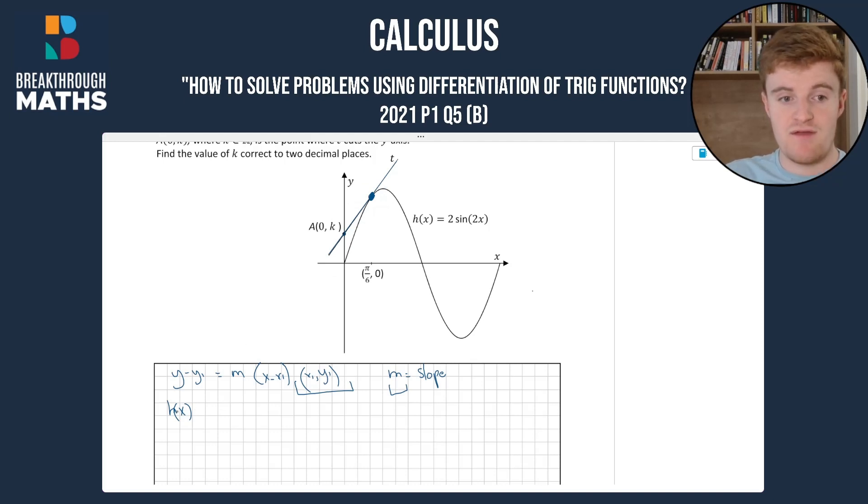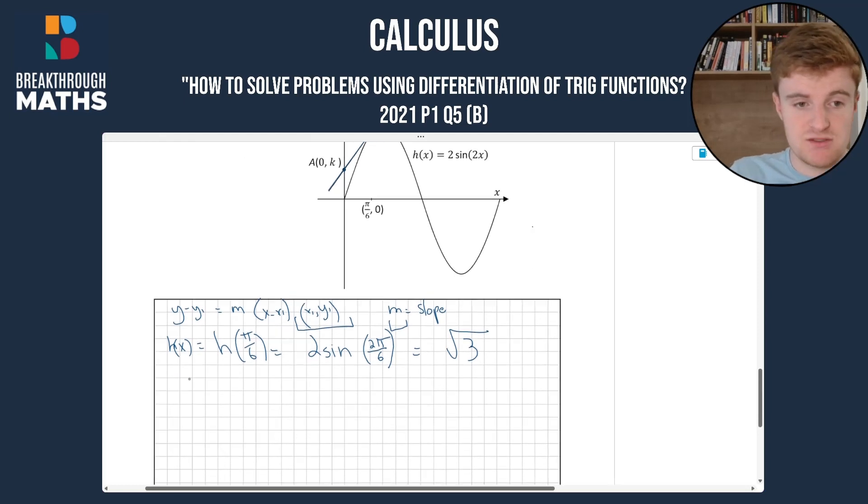So we have h(x), we're going to have h(π/6) = 2sin(2π/6). And when you put that into your calculator and make sure your calculator is in radians, you're going to get √3. So we know now that (x₁, y₁) is going to be (π/6, √3). That's x₁, y₁.